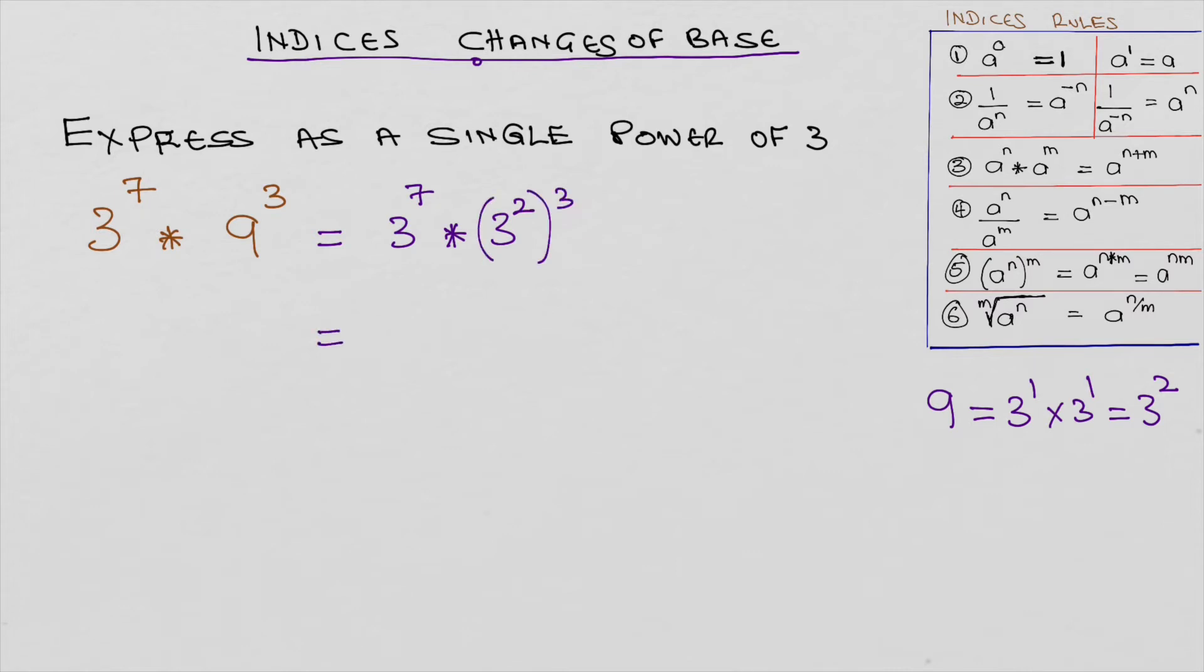And that becomes 3 to the power of 7 times 3 to the power of 2 times 3. Rule number 5.